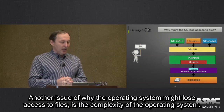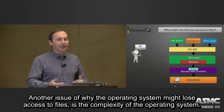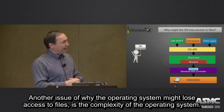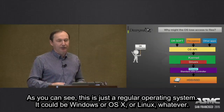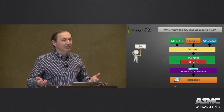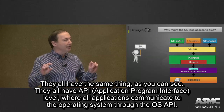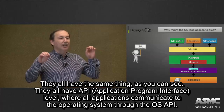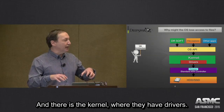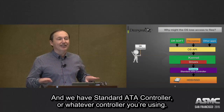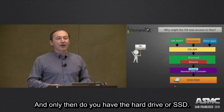Another reason why an operating system may lose access to files is the complexity of the operating system itself. Whether it's Windows, OS X, or Linux, they all have the same structure: an API (application programming interface) layer where all applications communicate to the OS, then a kernel with drivers, a standard ATA or SCSI controller, and only then the hard drive or SSD.